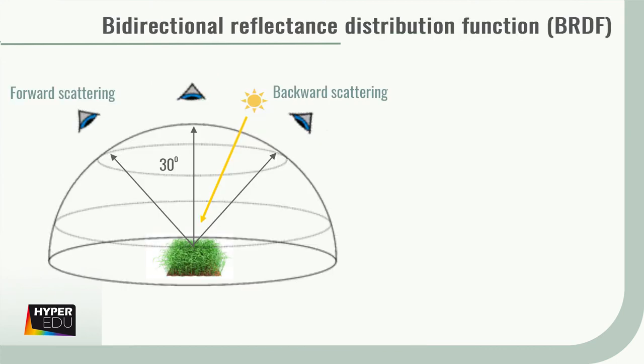As Lillesand and colleagues wrote in 2008, the most complete representation of an object's geometric reflectance properties is the bidirectional reflectance distribution function, short BRDF. For example, the reflectance of grain fields differs depending on which direction the sensor is looking from, or where the source of radiation is located.